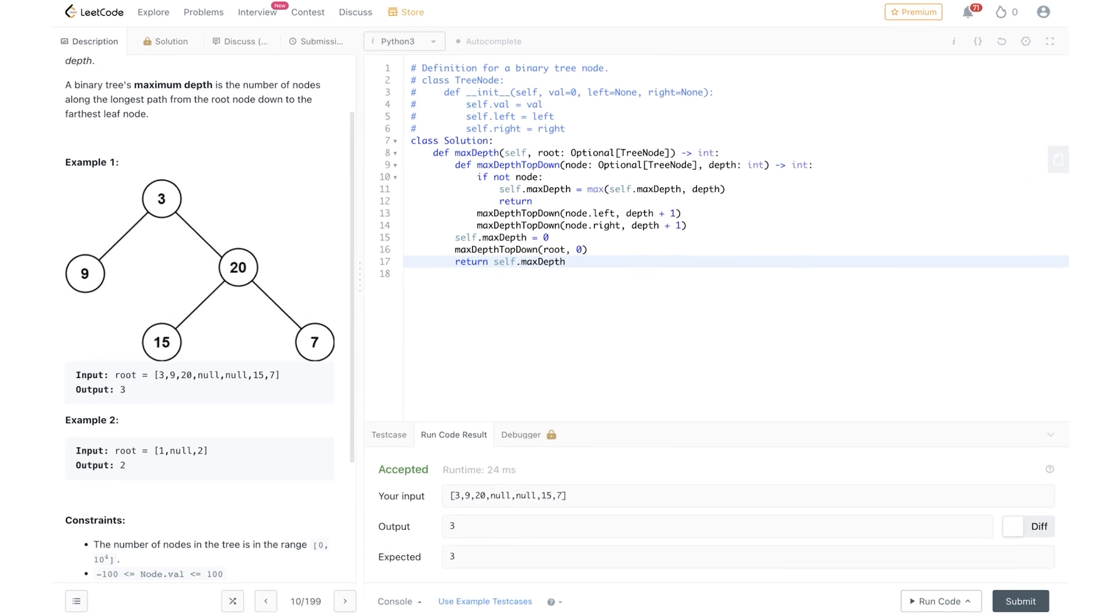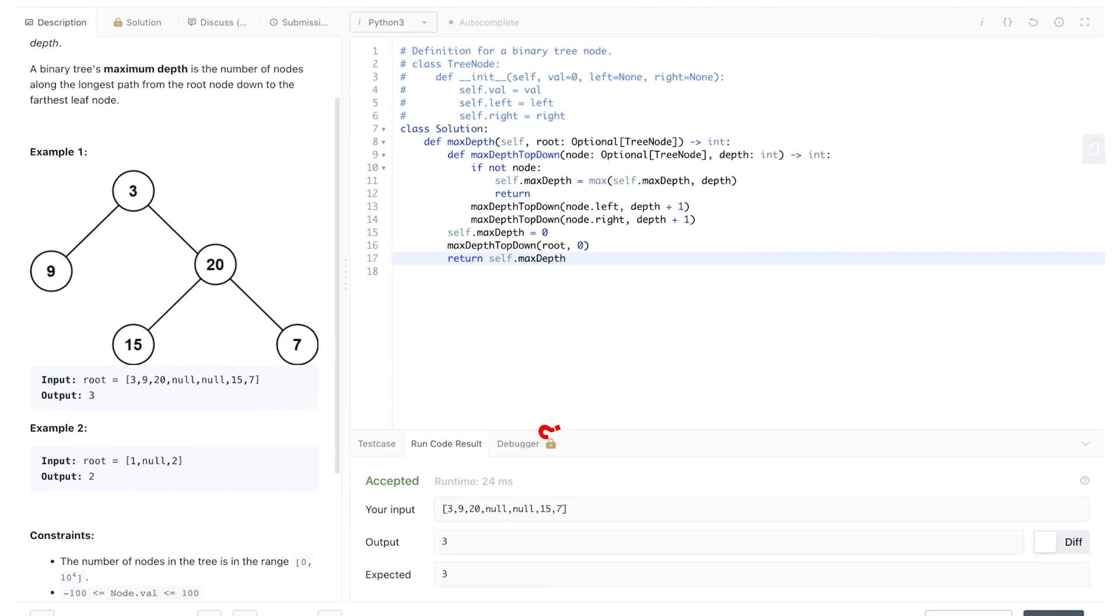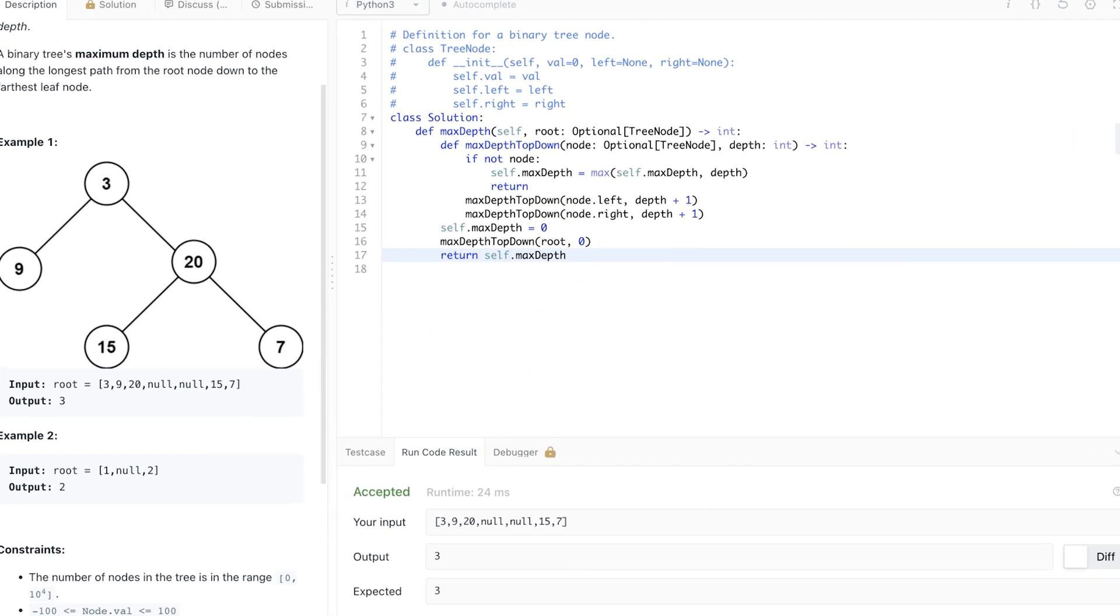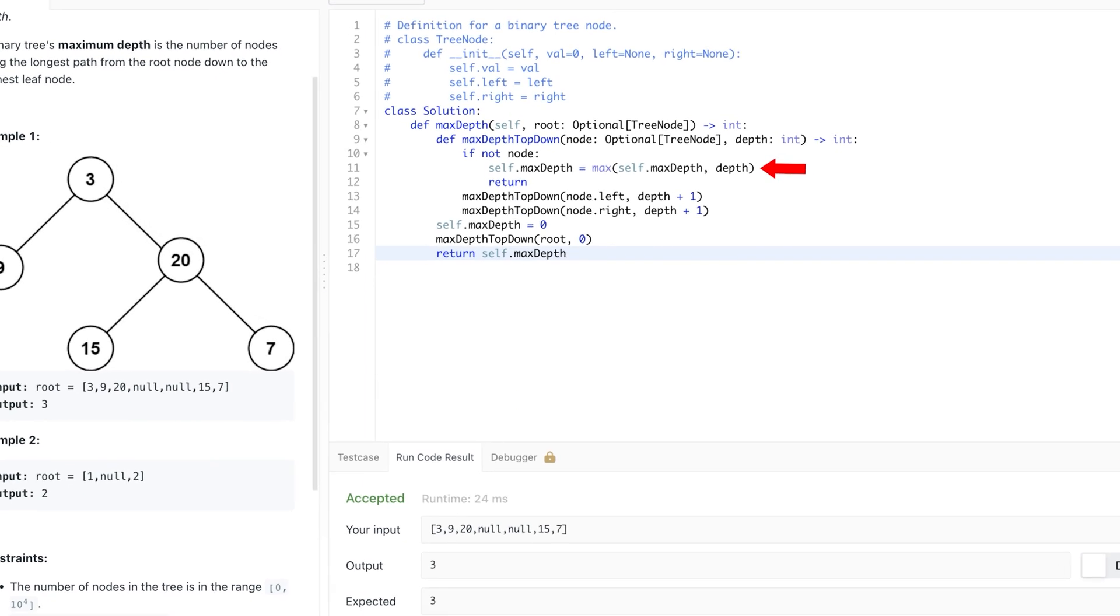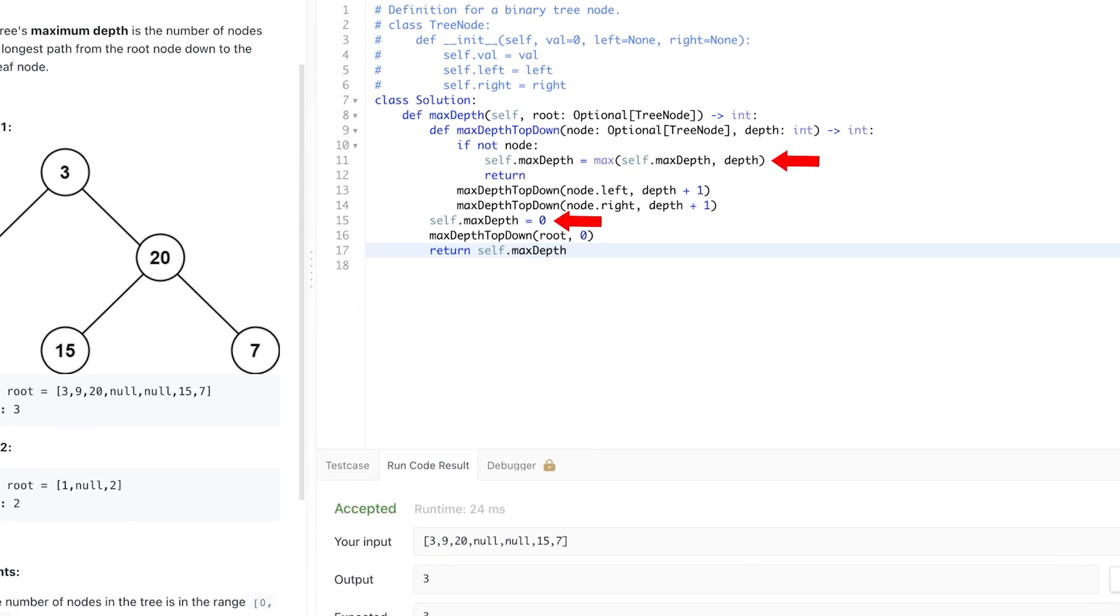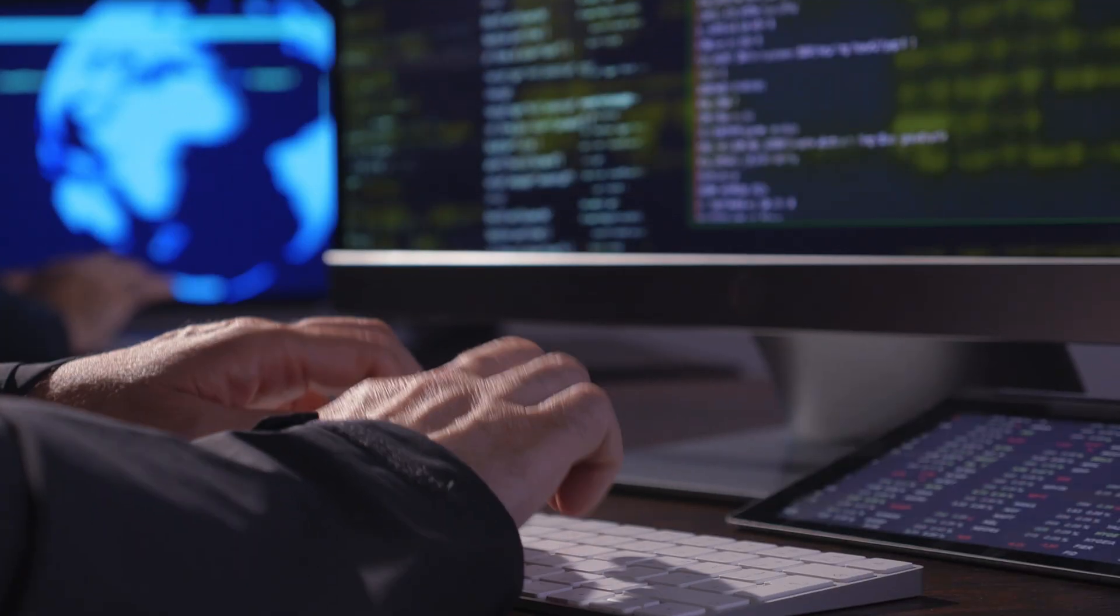I hope this was straightforward. Now, someone who writes max depth top down this way is still a newbie when it comes to programming. Can you see why? The max depth top down function here is not a pure function because it's changing the max depth that is not contained inside the function. And this is not something an experienced programmer would do. But how do we fix this?